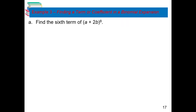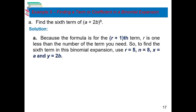Let's continue the discussion of the r-th term. We are looking for the 6th term of (A + 2B)⁸. Remember the formula r + 1 for the term number — since we want the 6th term, r + 1 = 6, so r = 5. N = 8, x = A, y = 2B. Similarly, for the 7th term r = 6; for the 8th term r = 7; and so on.